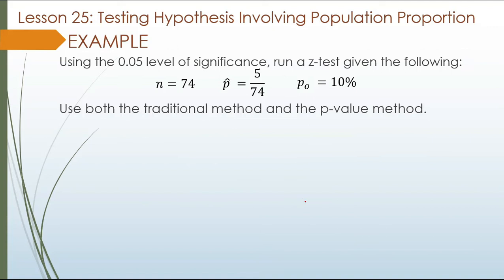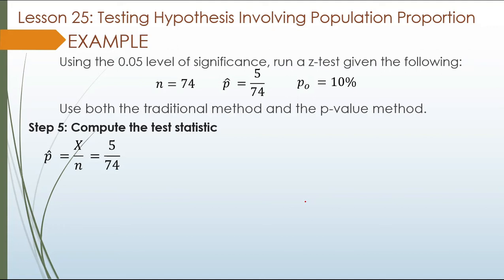Step 5: Let us compute the test statistic. First, compute p-hat equals x over n — that is 5 over 74, which equals 0.0676. As much as possible, use 4 decimal places rounded off.